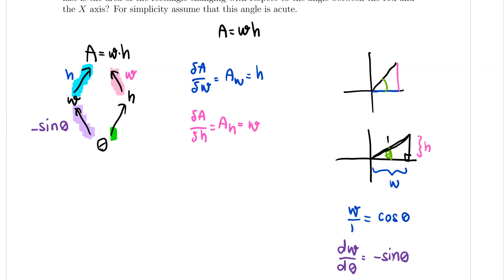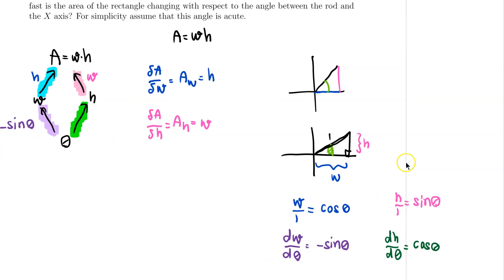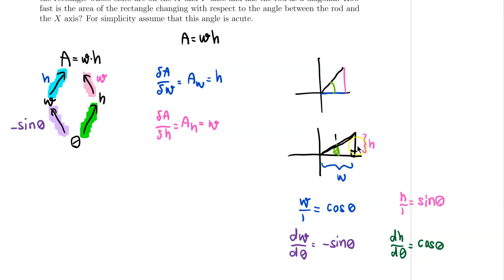For the last arrow, I need how fast the height changes with respect to theta. Using the same triangle, h divided by 1 equals sine of theta. Taking the derivative with respect to theta gives dh/dθ = cos(θ). So the green arrow is cosine theta.